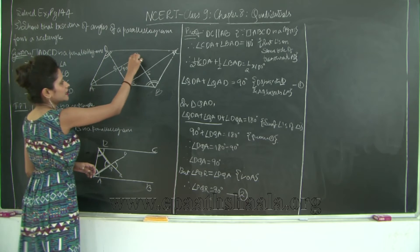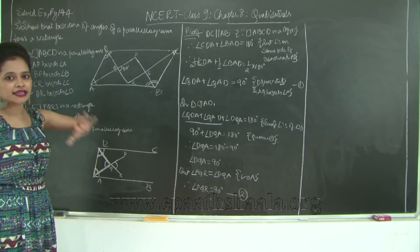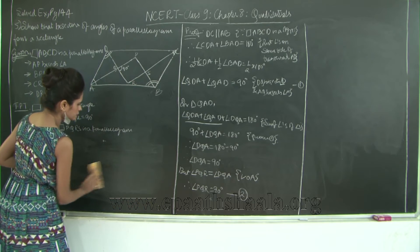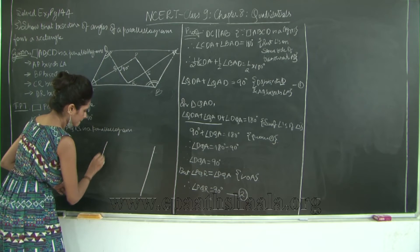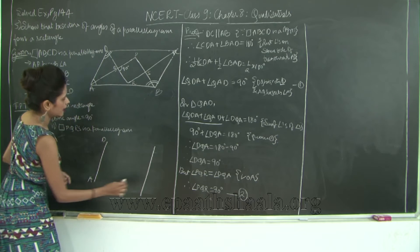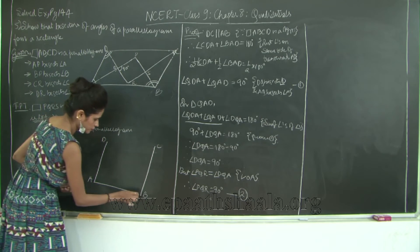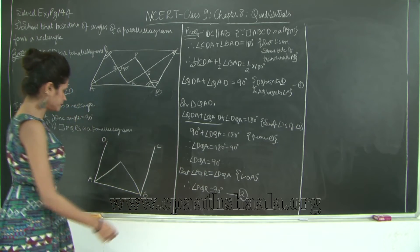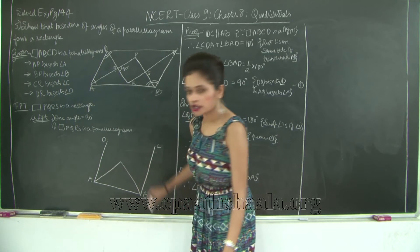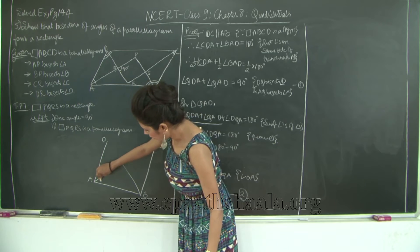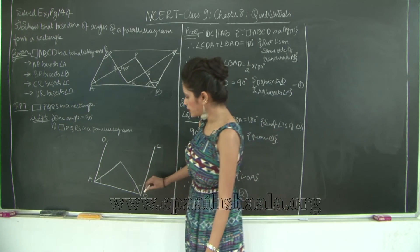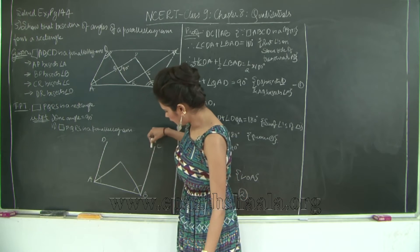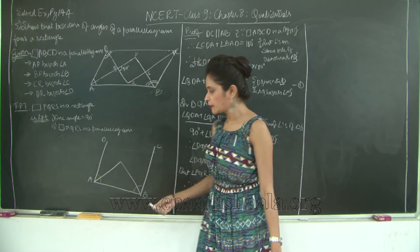Let us go ahead and prove angle P is 90 degrees in a similar fashion. Now we are going to take parallel lines AD and BC. AD is parallel to BC and AB is the transversal. Therefore angle A plus angle B equals 180 degrees, because they form interior angles on the same side of the transversal. Therefore half of angle A and half of angle B equals 180 divided by 2, which is 90 degrees.